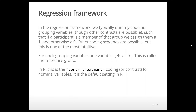In the regression framework, we dummy code our grouping variables. Dummy coding is the most common and often the most intuitive. The way it works is that if a participant is a member of a given group, we assign them a 1 and otherwise a 0. For each grouping variable — diet and exercise, for example — one variable gets all zeros, and this is the reference group. Every other group is then compared to the reference group. In R, this is called treatment coding or the treatment contrast. It applies to nominal unordered categorical variables and is the default in R.